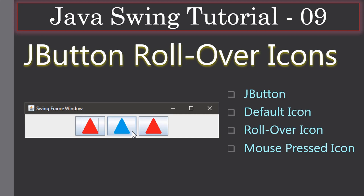Hello friends, welcome to the Java Swing tutorial. In this video we are going to look at JButton with rollover icons. In the previous video we looked at the static icon, but here the icons will change based on the mouse action. We are going to look at the default icon — the icon displayed for the button — then the rollover icon, which changes when the mouse cursor enters the button, and then the mouse pressed icon, which changes when you click the left mouse button.